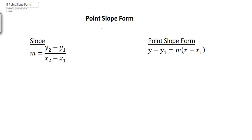This video is going to look at the point-slope form of an equation. Before I look at that, I want to go back and talk about our slope formula, where m equals y2 minus y1 over x2 minus x1, where (x1, y1) is a point on the line and (x2, y2) is another point on the line. Recall that the slope is simply the change in y divided by the change in x.